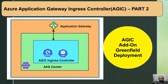Welcome to my YouTube channel. This is part two of the Application Gateway Ingress Controller series, where I'll explain how to use the ingress controller add-on for greenfield deployment. In part one we discussed greenfield vs brownfield deployment. In greenfield, we create resources from scratch. In brownfield, we already have existing resources like AKS or Application Gateway and we enable the add-on to integrate them. This video focuses on greenfield deployment; part three will cover brownfield.